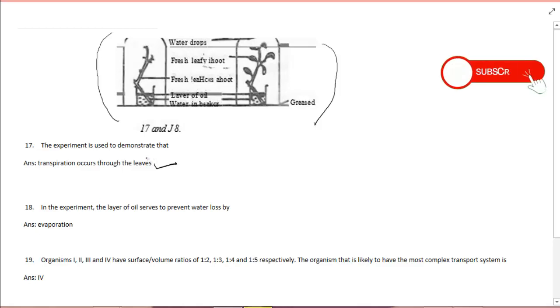Transpiration occurs through what? Leaves. Now transpiration is the removal of excess water from plants into the atmosphere in form of water vapor.